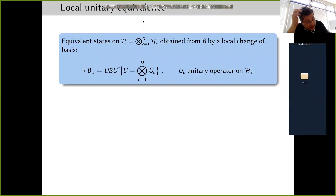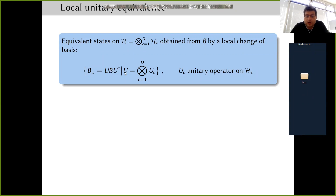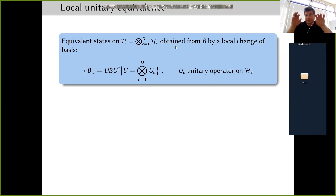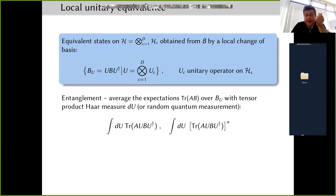A system is in a state, but there are many equivalent states. Equivalent states in the Hilbert space of a system can be obtained from a given state rho by a local change of basis — meaning I take each subsystem and change the basis individually. This amounts to conjugating the state rho by a unitary operator U which is a tensor product of unitary operators per subsystem. Properties like entanglement should not depend on this local change of basis, so we expect entanglement to survive averaging over local unitary transformations.